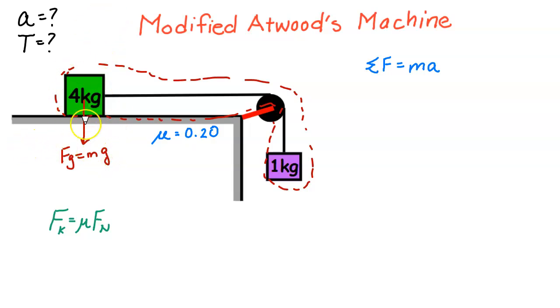So 4 times 10, that would be 40 newtons. So that is the gravitational force on this block.